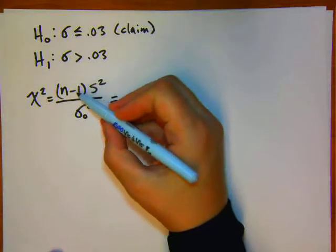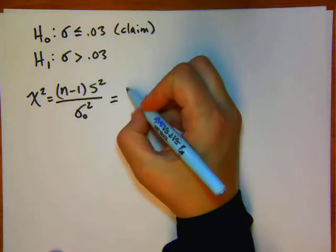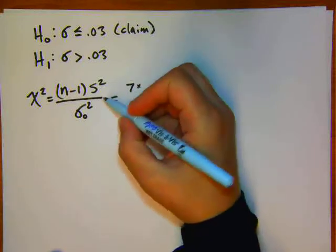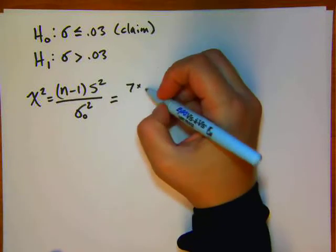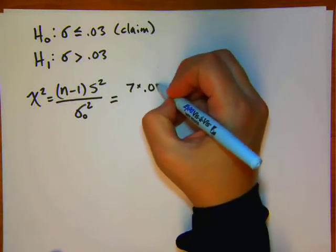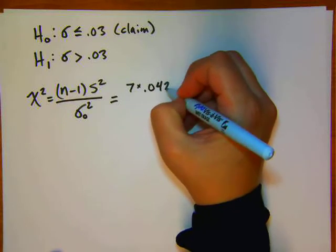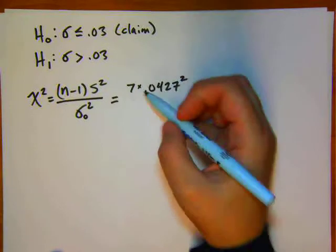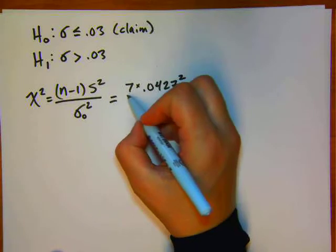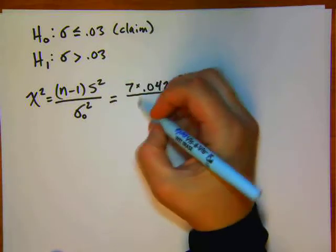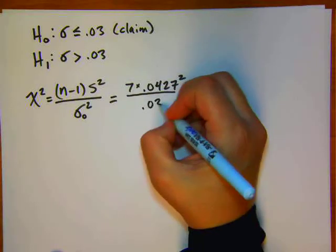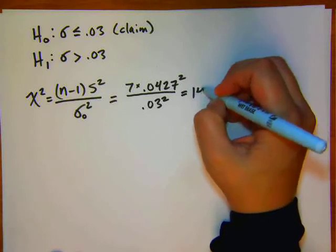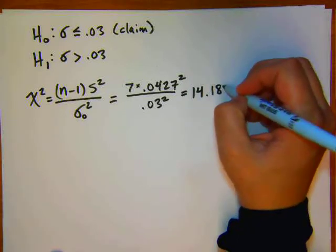Now we substitute in the numbers we found. The degrees of freedom is n minus 1, which is 8 minus 1 equals 7. Then we have our sample standard deviation .0427 squared, divided by the hypothesized value .03 squared. That comes out equal to 14.1811.